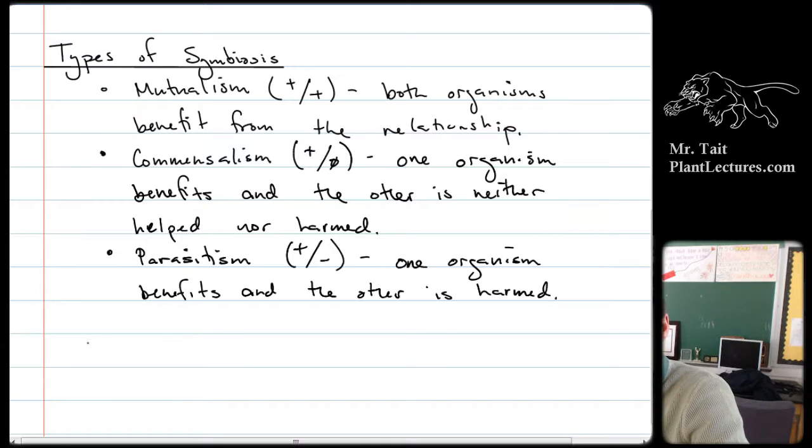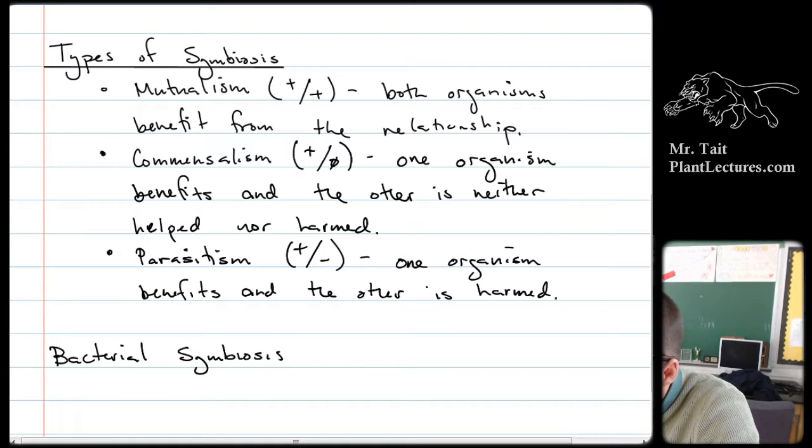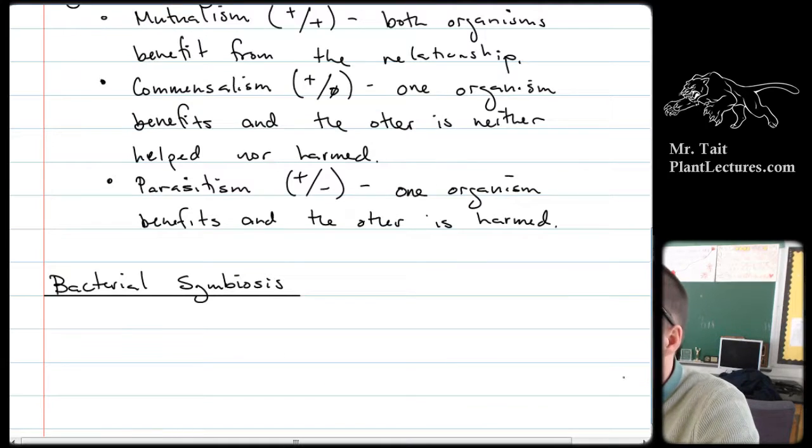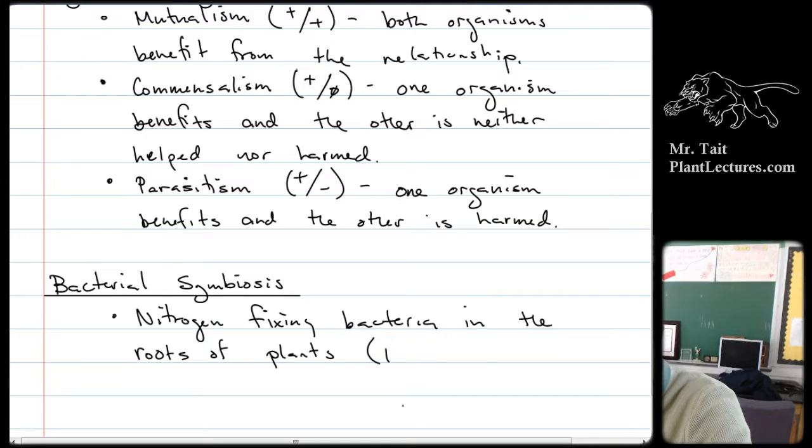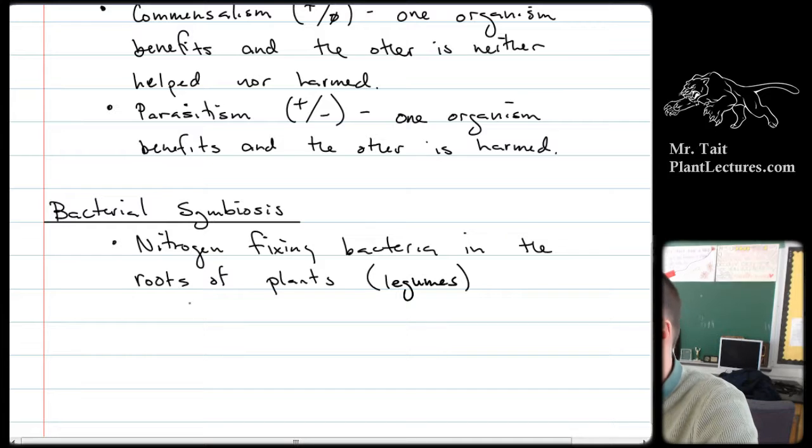Since we're talking about bacteria, we're going to focus on bacterial symbiosis. And bacterial symbiosis has some really common examples. Number one, I want to talk about nitrogen-fixing bacteria in the roots of plants. These plants would be called legumes. And the plants themselves have little nodules in their roots, called root nodules. And those are spots where these bacteria can live.